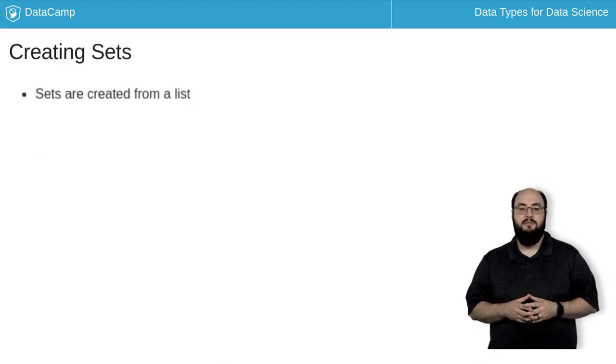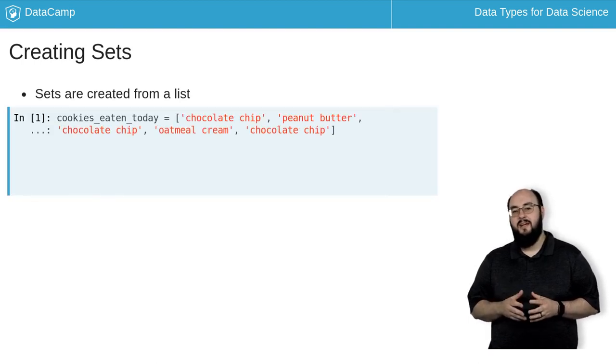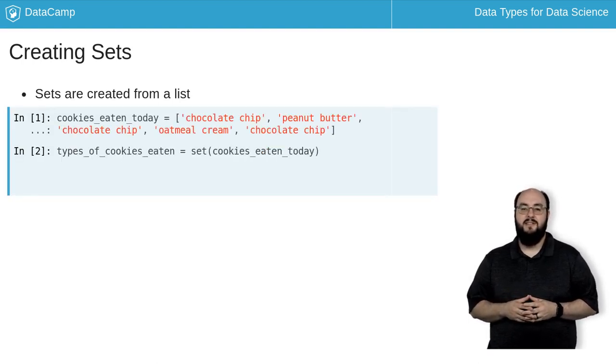A set is almost always created from a list. For example, I might have a list of cookies I've eaten today. I can make a set of them by passing them into the set constructor.